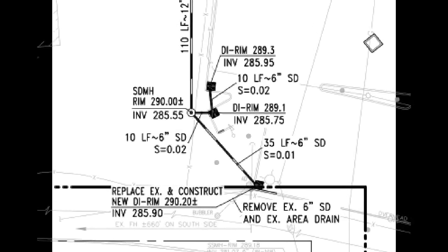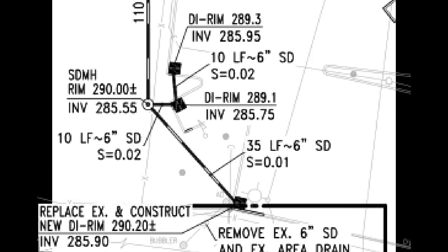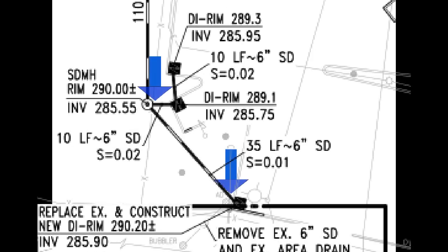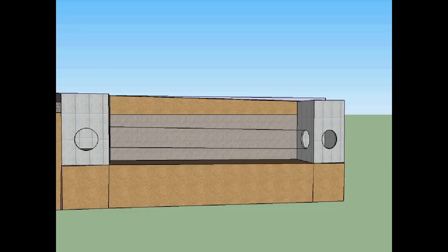As you can see on this drawing over here, I have a piece of pipe that I need to install. Looking at the drawings, I have two DI rims. DI stands for drain inlet, and the rim is the top part of this inlet. The elevation called out in the drawings has an elevation for the top of each one of those rims. And the one that we want to pay attention to is the elevation of the invert. The invert is the bottom of the pipe from the inside.